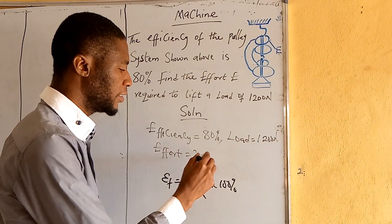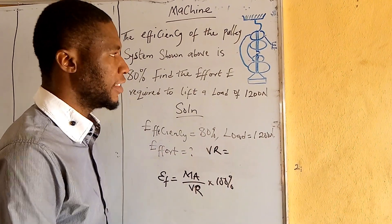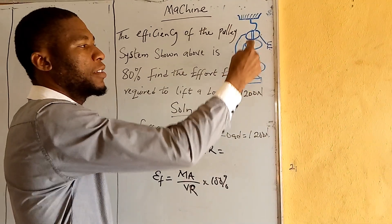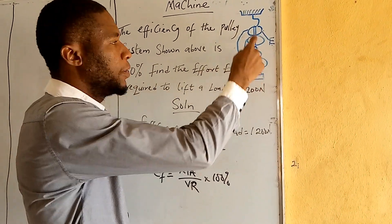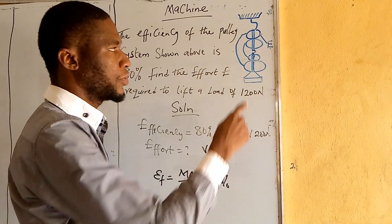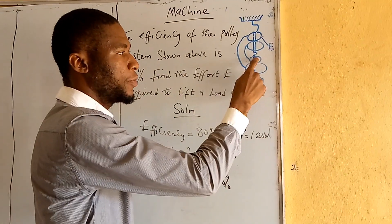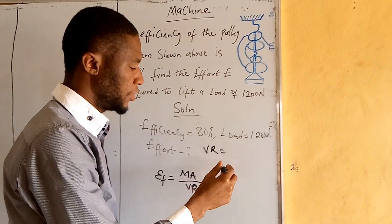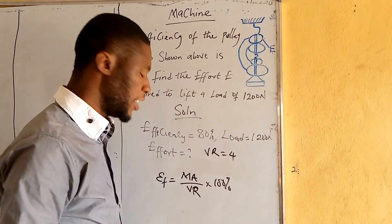Efficiency is equal to mechanical advantage over velocity ratio, times 100%. We are given the efficiency and we can find the velocity ratio. The velocity ratio V equals the number of circles in the pulley system — counting 1, 2, 3, 4 — so our velocity ratio is equal to 4.